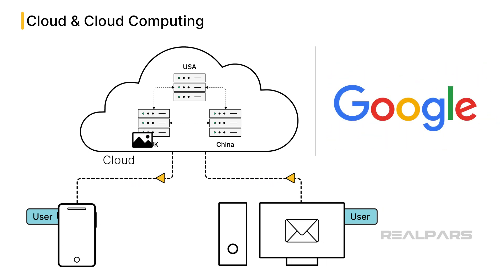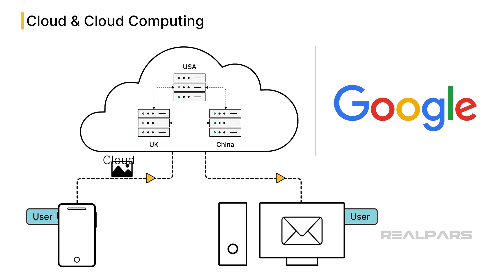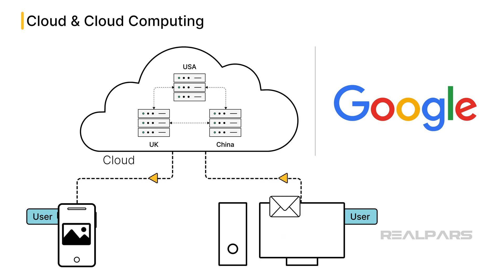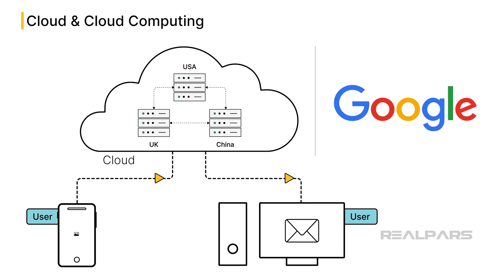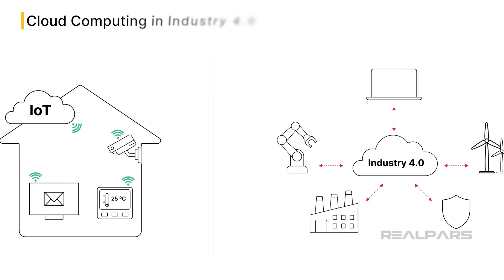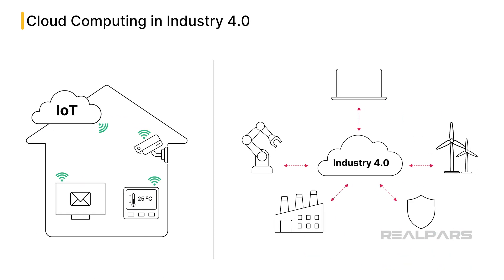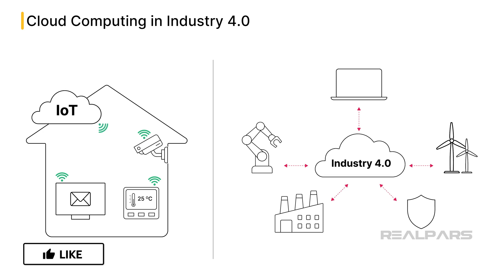One common domestic application of a basic cloud computing service is cloud-based storage and backup services like Google Drive or iCloud. Why use valuable space on your PC hard drive or smartphone memory to store photos, documents, videos, and other personal files when you can store them on the cloud? Google will also handle and store all your emails, saving valuable hard drive space on your PC.